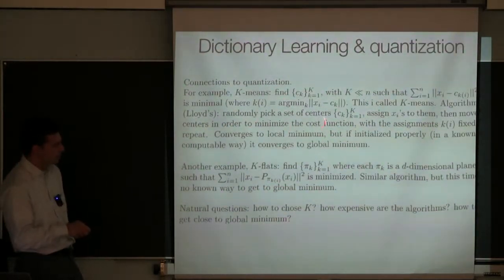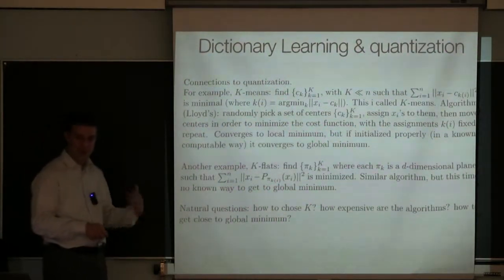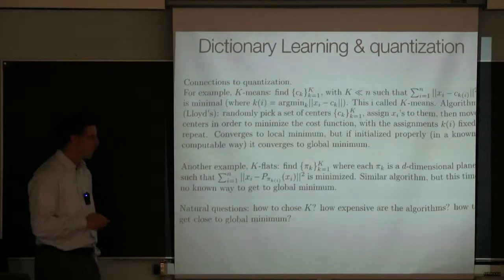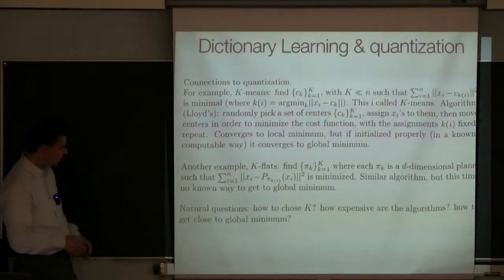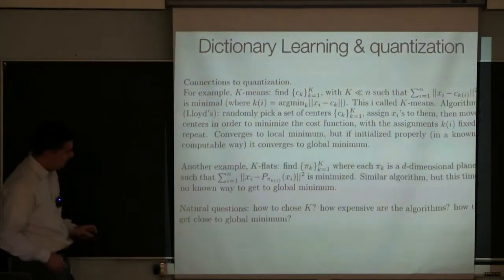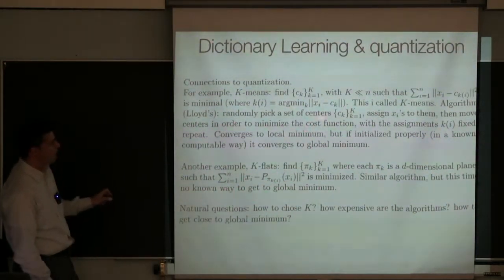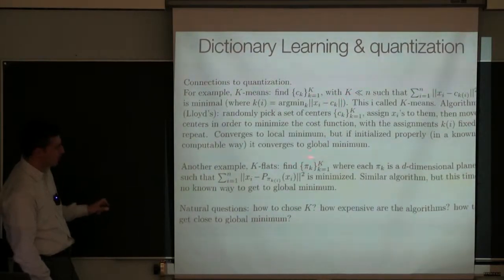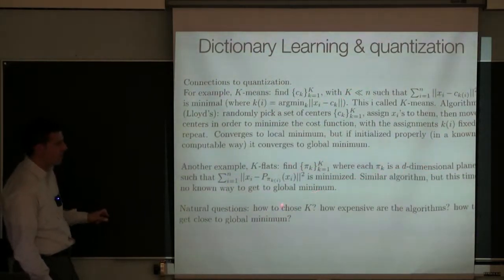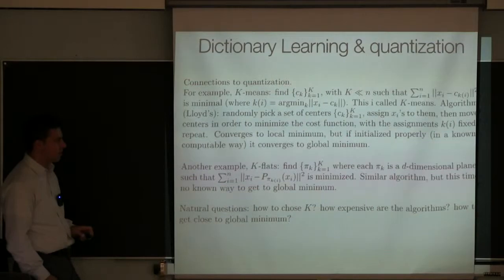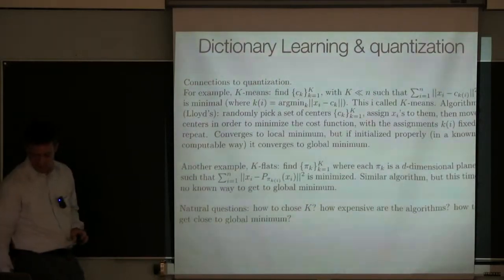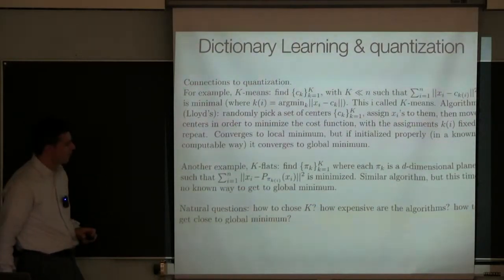We don't have any such thing for k-flats — it's an open problem. Many people are very interested in this, but it seems much harder than k-means. And even k-means++, it took many, many years to figure that out. There are many questions: how do you pick the number of centers? How do you pick the number of planes? How do you pick the dimension of the planes?